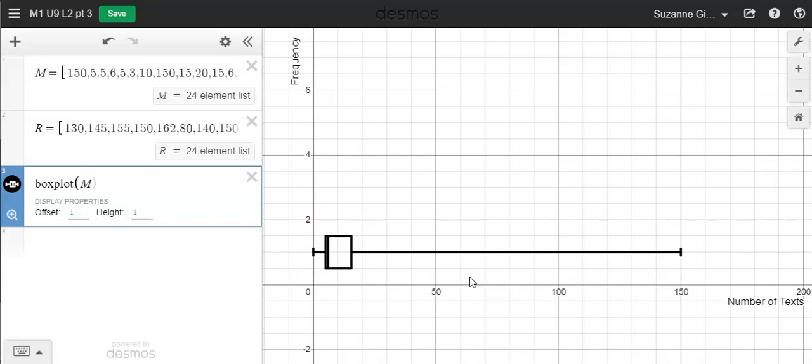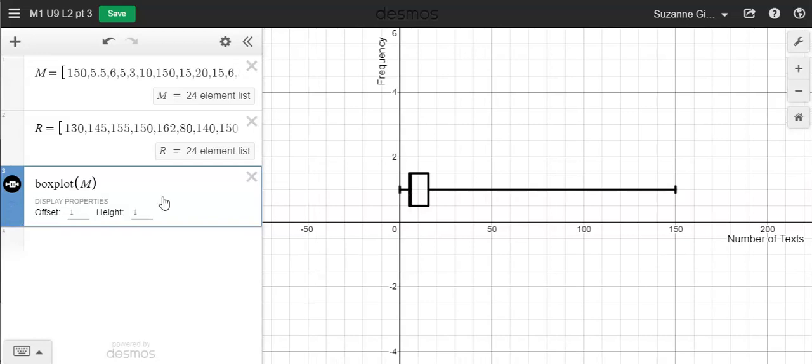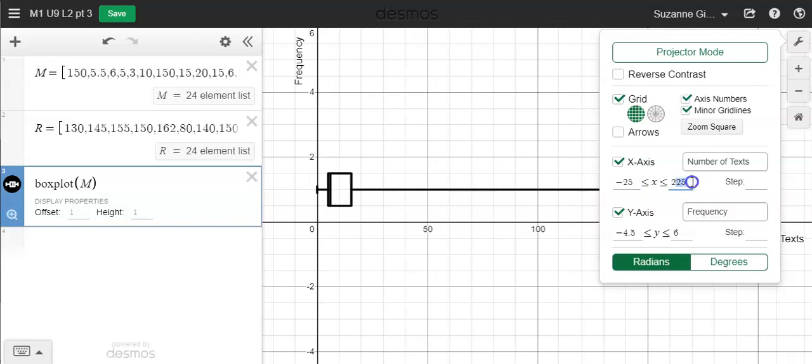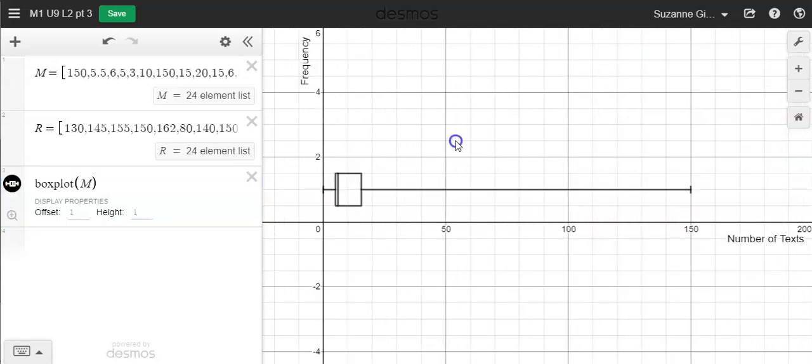If I'm unhappy with the way that it's viewed, this button right here is a zoom fit. If I'm still unhappy with the way the window is, I can always go to the wrench and adjust it myself. So I can change this to go to negative 25 and say 200. I can see here that I have my minimum, then my first quartile, and then the median or second quartile is really close to that first quartile. Then I have third quartile, and then my maximum is up here.